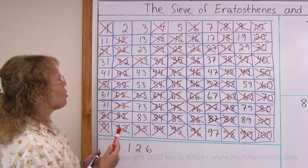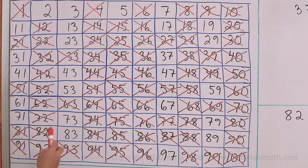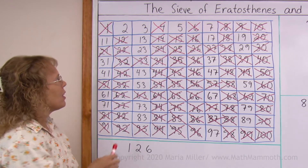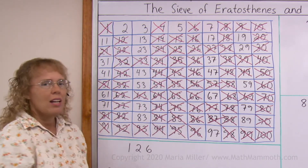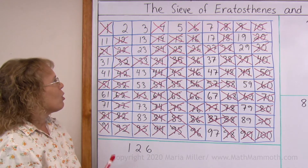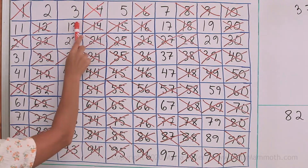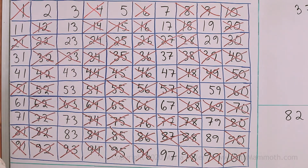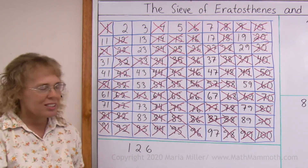I want to briefly explain why I do not have to go through multiples of 11, 13, 17, and so on on the chart. For example, if there was still a number that was a multiple of 13 not yet crossed out — say 13 times 5 or 13 times 7 — I would have already crossed it out when I went through multiples of 5 and 7. The only way a multiple of 13 could remain uncrossed would be if it was 13 times 11, 13 times 12, or 13 times a number bigger than 10 — which is not possible within our hundred chart. Therefore, it is enough to go through numbers 1 through 10 and cross out the multiples, and then what is left are the primes.